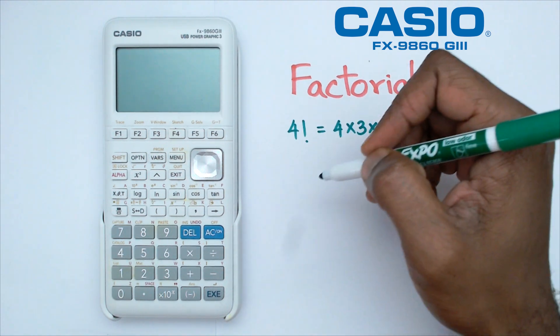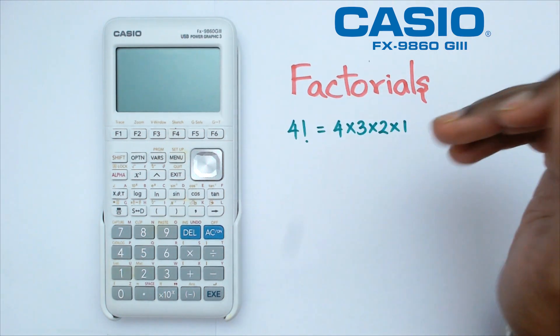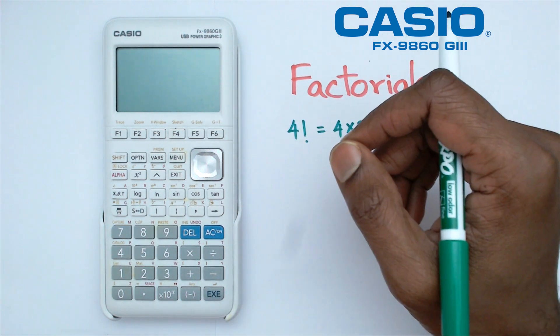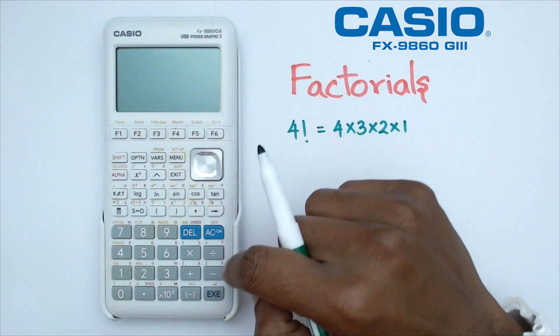So if you take something like 10 factorial, you would do 10 times 9 times 8 times 7 all the way up to 1. Now, doing this in the calculator, there is a button and there is a shortcut to do this because as you get big numbers, you don't want to be sitting there typing all these numbers. So let's get into it.